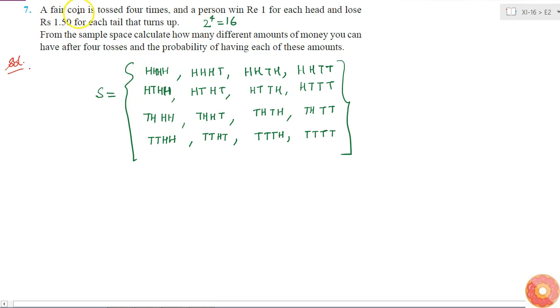Since it is said that the coin is a fair coin, the probability of getting any one of these outcomes is simply 1 by 16, because all of them are equally likely and there are 16 outcomes. So the probability of each one will be 1 by 16.